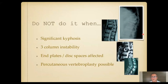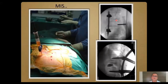Whenever there is gross segmental instability or three-column instability — where the posterior column is stretched out along with an anterior column deficit, destroyed end plates, or affected disc space, as seen in this case with paper-wafer-thin bone and adjacent disc involvement — in today's practice I would add a pedicle screw fixation either through open surgery or MIS, preferably one level above and one level below, with a small screw at the same level along with anterior reconstruction via vertebroplasty.